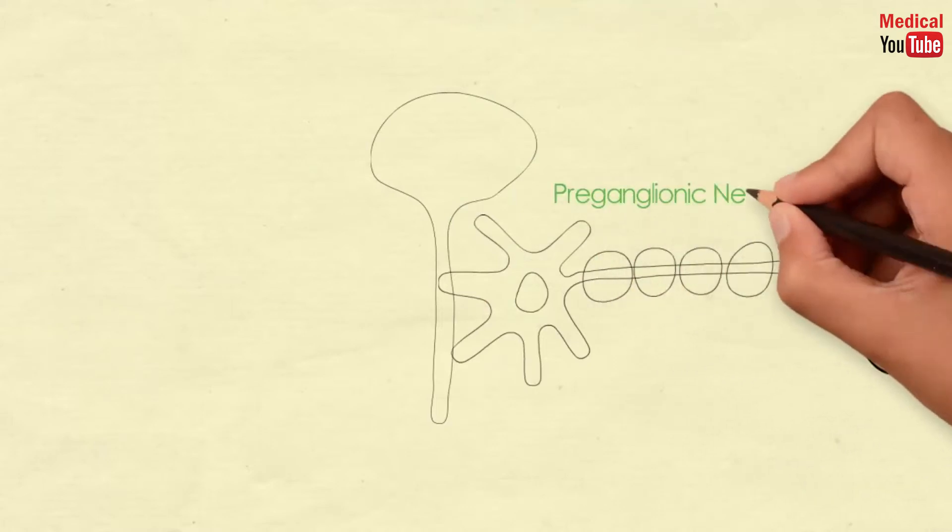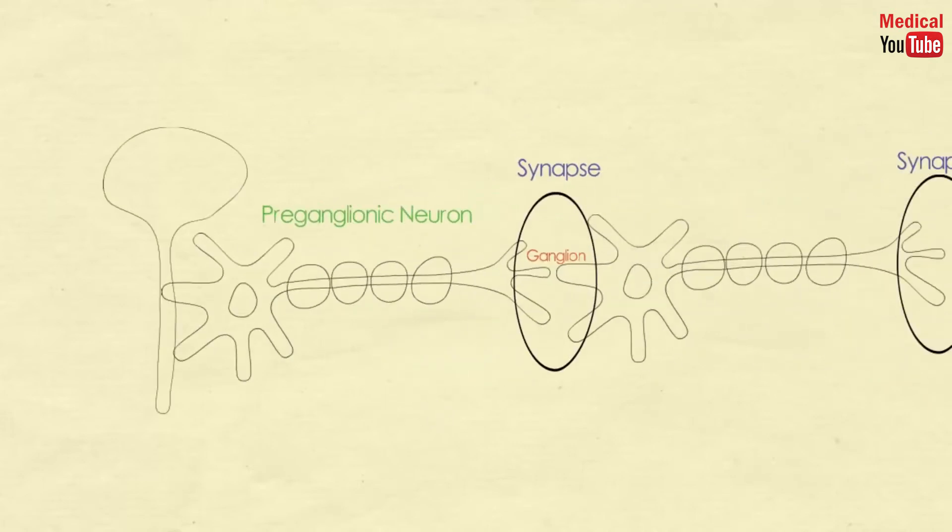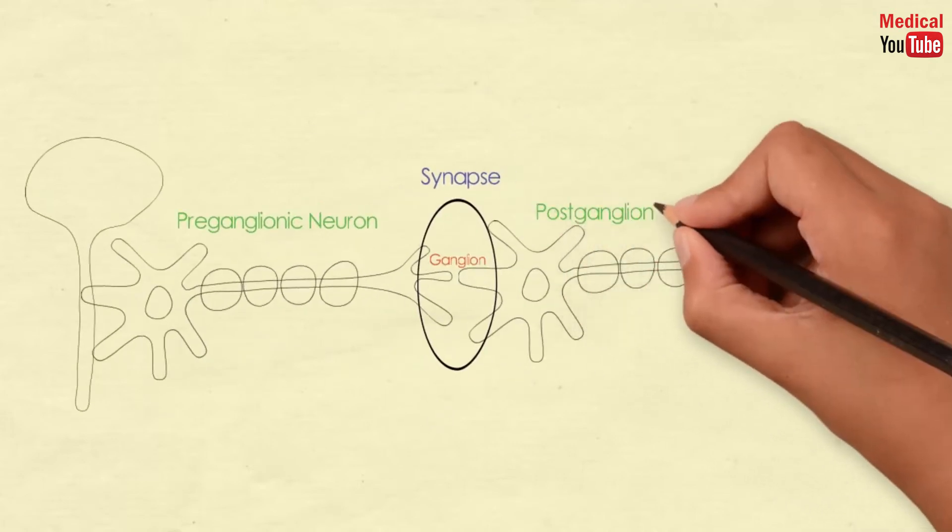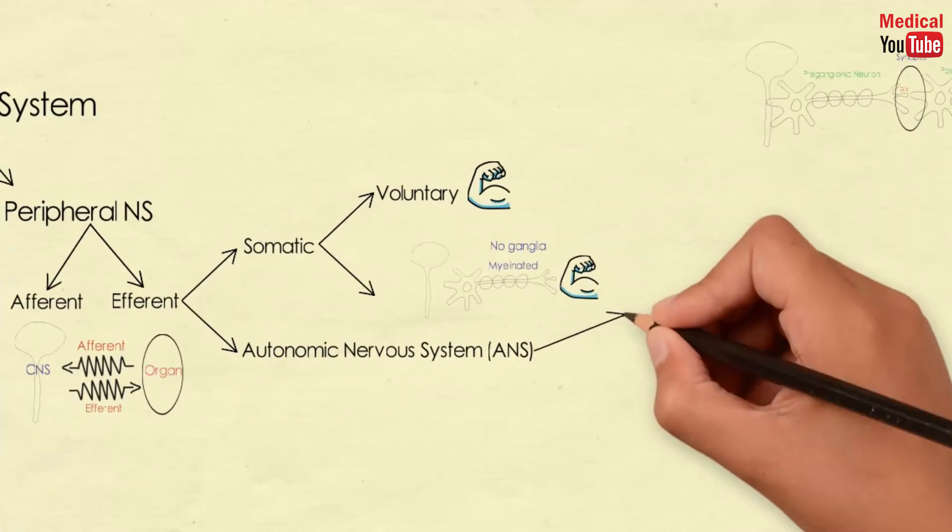Pre-ganglionic neuron is the neuron which its cell body is embedded in CNS and ends at the ganglion. And post-ganglionic neuron, its cell body originates at the ganglion and ends at the effector organ.